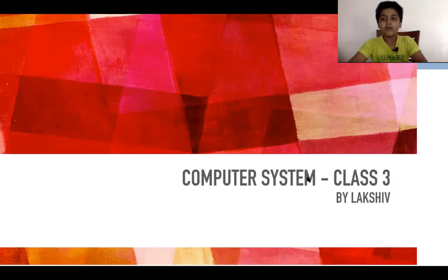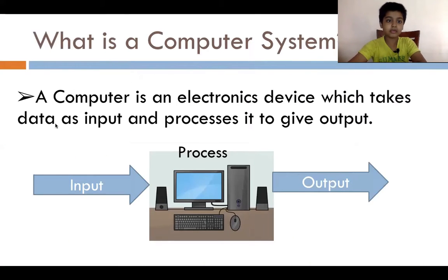So what is a computer system? A computer system is an electrical device which takes data as input and processes it to give output. The person gives the computer input then the computer processes it to output.